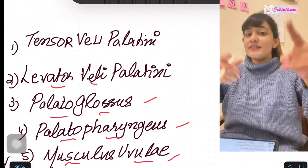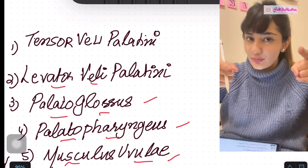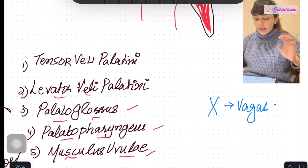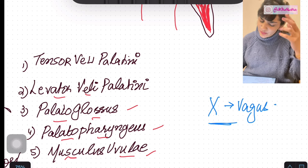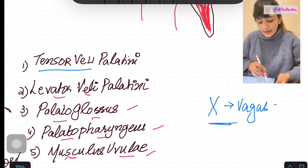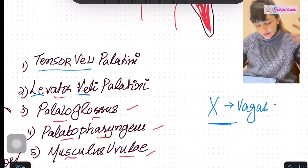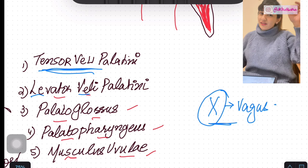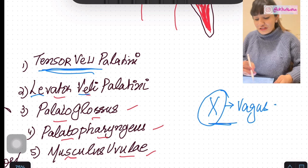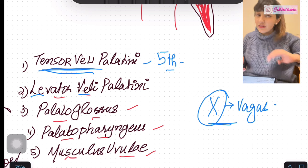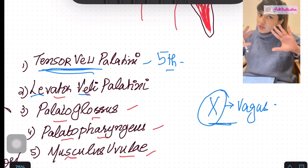You are lucky — all of these muscles are supplied by one nerve and one nerve only: the vagus nerve, the 10th cranial nerve. The only muscle not supplied by the vagus is the tensor veli palatini, which is supplied by the fifth cranial nerve — the trigeminal nerve, mandibular division. So nerve supply is done — easy.